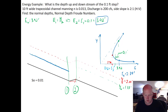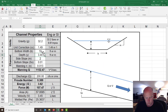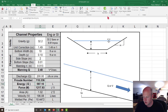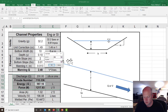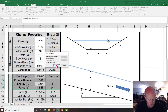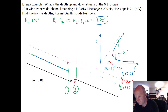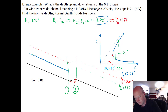We goal seek for the supercritical answer by starting with a small initial guess so the Froude number stays greater than 1. Goal seeking E = 3.42 by changing depth gives us a depth of 1.37 feet.